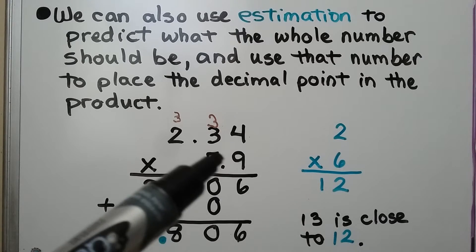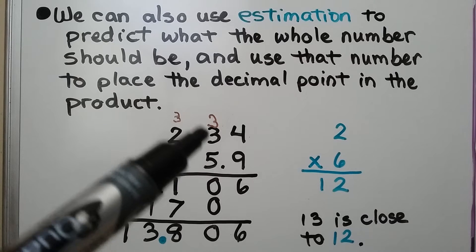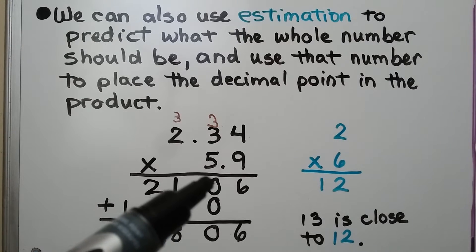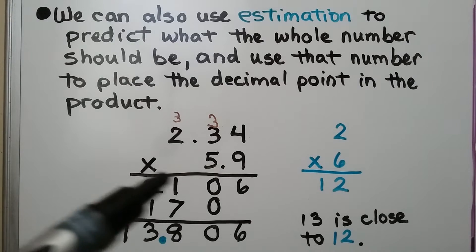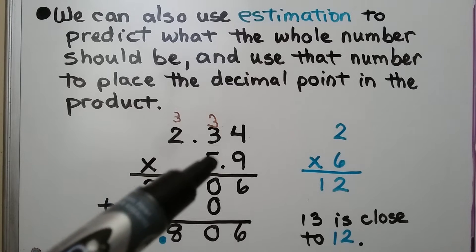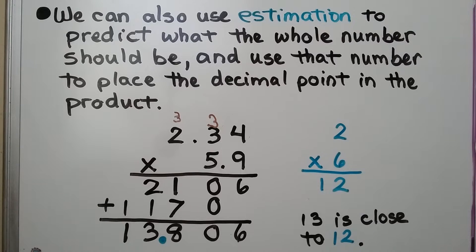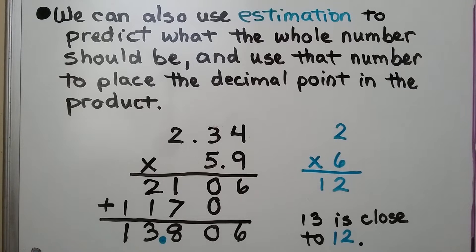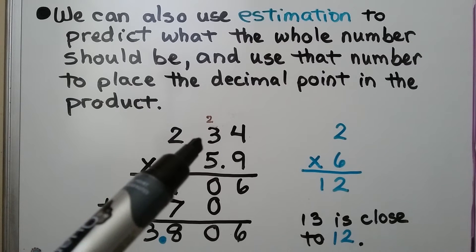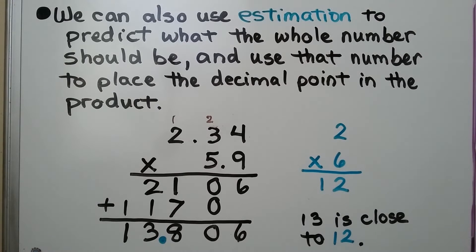We do the actual multiplication. We have 9 times 4, which is 36. We regroup the 3 and put the 6 down. 9 times 3 is 27, plus 3 more is 30. We regroup the 3 and put the 0 down. 9 times 2 is 18, plus 3 more is 21. Now we multiply the 5 to each place value — but first erase our regroupings. 5 times 4 is 20. 5 times 3 is 15, plus 2 more is 17. 5 times 2 is 10, plus 1 more is 11.